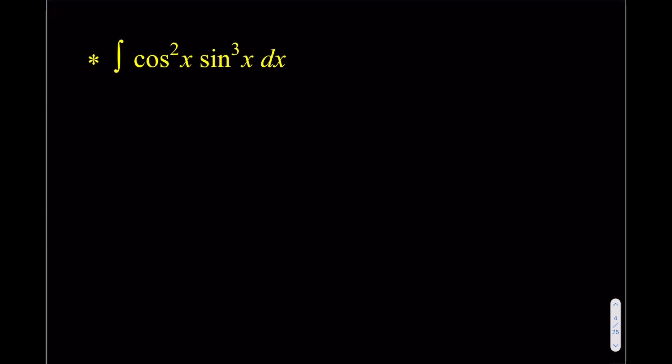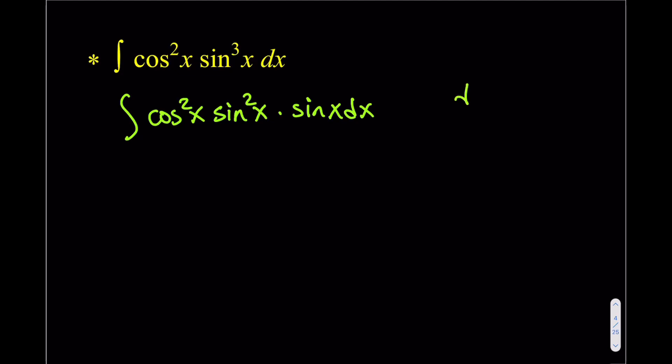Here's another example. This one has cosine squared with sine cubed — an even power with an odd power. If we have one odd power, we're good. In this case we don't have a choice; we just have to separate the sine x. So this gives us cosine²x · sin²x multiplied by sine x dx. Since sine x comes as a first power, that's going to be our du.